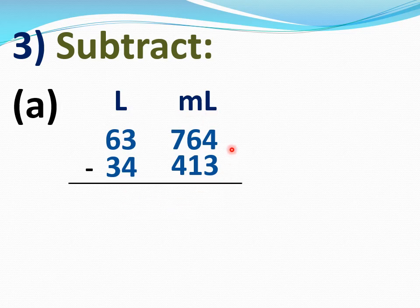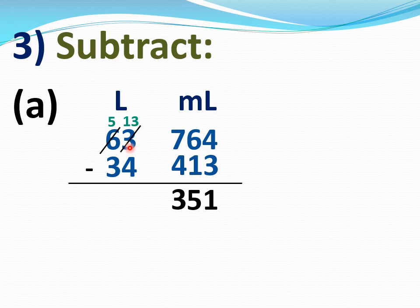Now subtract this. 4 minus 3 is 1. 6 minus 1 is 5. 7 minus 4 is 3. Now see, this 3 is smaller than 4, so we will borrow from the next number. This 6 will become 5 and this 3 will become 13. 13 minus 4 is 9. 5 minus 3 is 2. Answer is 29 liters 351 milliliters.